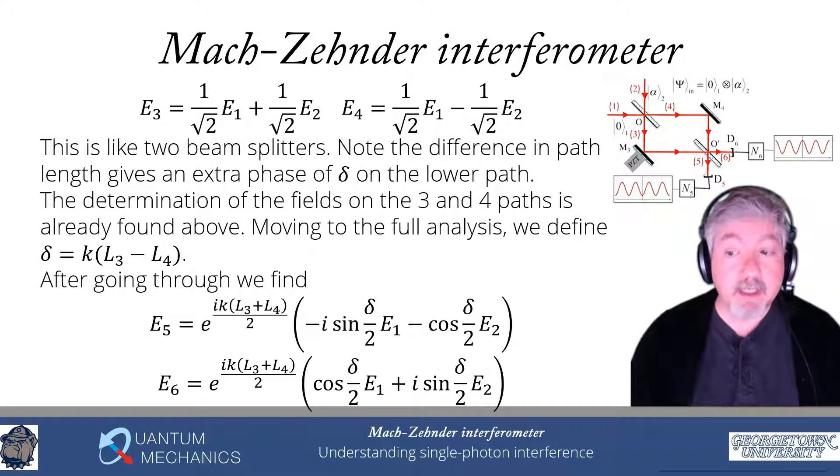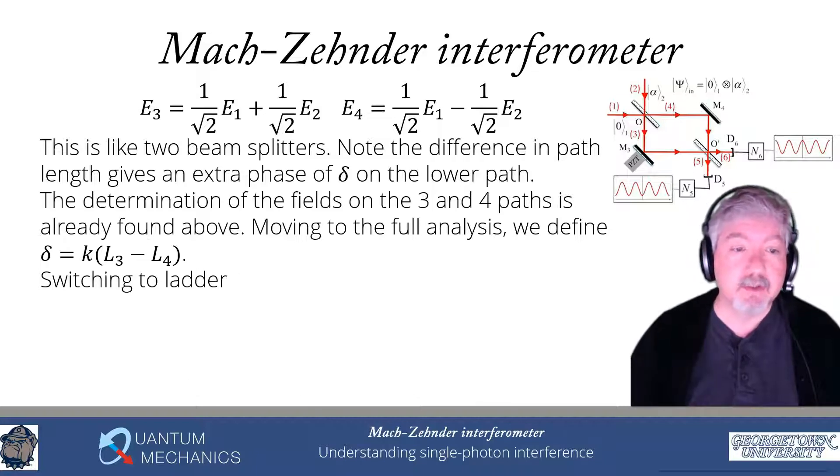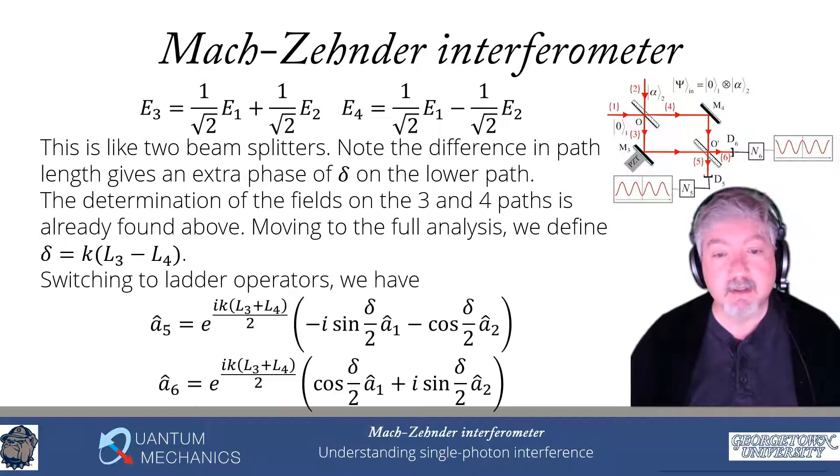It's complicated, but it's really not that hard. We're just applying our rules for the beam splitter twice, and we just have to collect terms, that's all. So this gives us what the electric fields are, but we really want to be working with those raising and lowering operators. Because the electric fields are proportional to them, we can just immediately put in that substitution into the ladder operators, and it just requires essentially replacing the Es by the As.